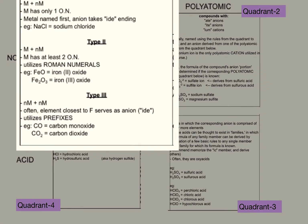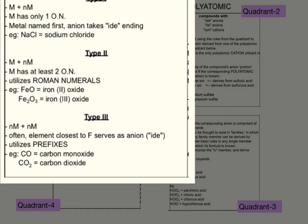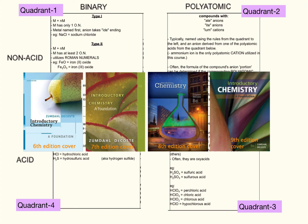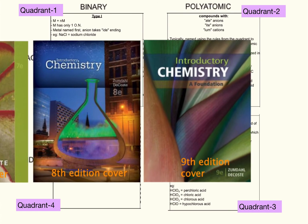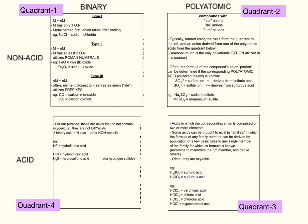Quadrant 1 is broken down into type 1, type 2, and type 3 compounds. I should give the disclaimer that this is not standard nomenclature terminology — I borrowed type 1, type 2, type 3 from Zumdahl's recommended text, and that's the first place I saw binary non-acids broken down into subcategories. I think it's a very clever invention and it's what makes this nomenclature grid work. So where we want to go next is to learn what a type 1 compound is and what the rules are for naming it.